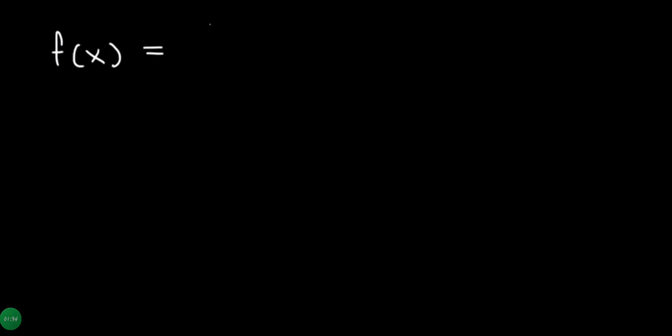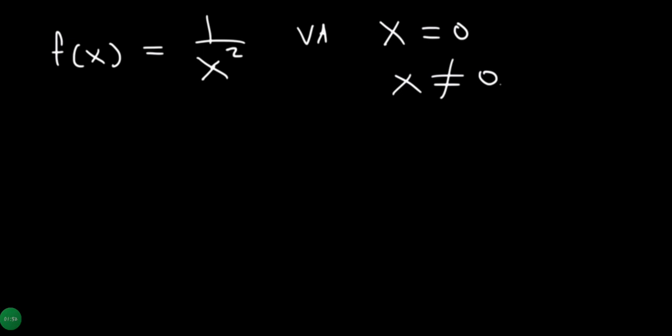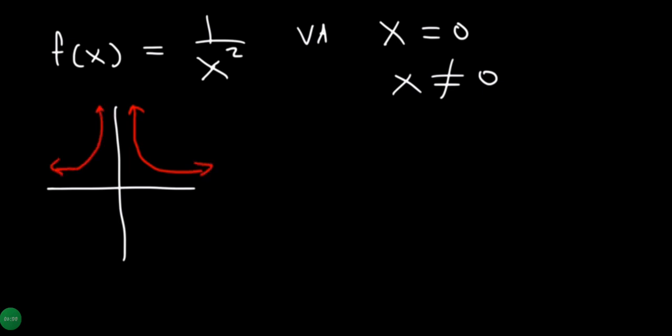These are non-removable types. Now the point of discontinuity: f(x) is equal to 1 over x squared. When x is equal to zero, the denominator is zero. So at x equals zero, the graph shows infinite discontinuity.